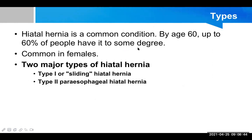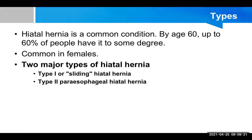Hiatal hernia is a common condition in clinical practice. By the age of 60 years, up to 60 percent of people have it to some degree, so it is not uncommon. Many present with GERD, and we don't take it seriously, but it may actually be caused by hiatus hernia of the sliding type. It is more common in females, and there are two major types: Type 1, also known as sliding hiatal hernia, and Type 2, known as paraesophageal hiatal hernia.